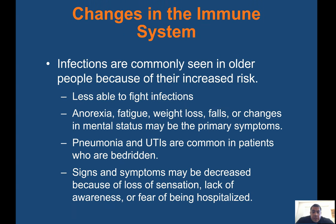Changes in the immune system: infections are commonly seen in older people because they are less able to fight infection. Anorexia, fatigue, weight loss, falls, or changes in mental status may be the primary symptoms. Pneumonia and UTIs are common in patients who are bedridden or have catheters — if a catheter hasn't been changed in a while, it increases the risk of UTI. Signs and symptoms may be decreased because of loss of sensation, lack of awareness, or fear of being hospitalized.